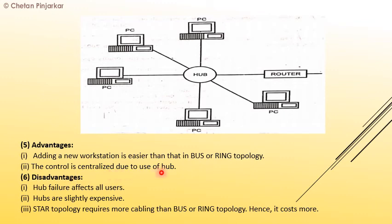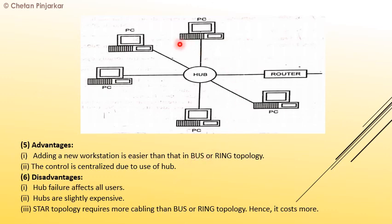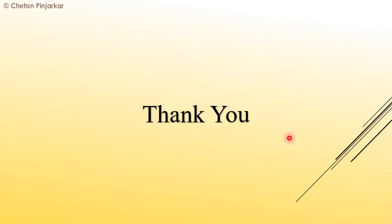Control is centralized due to the use of a hub. A hub failure affects all users — if the hub fails, everyone is disconnected. Hubs are slightly expensive, and star topology requires more cabling than bus and ring topology, making its cost higher. Thank you.